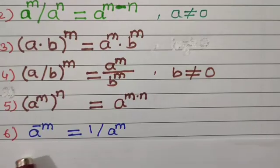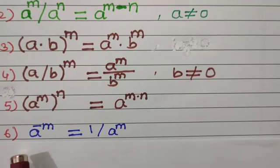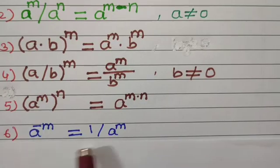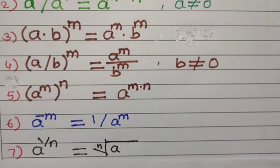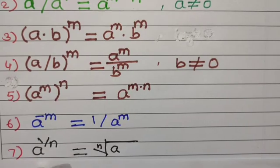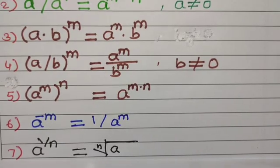Property number 6: a to the power minus m is equal to 1 upon a to the power m. When the power is negative, we take the reciprocal of the number with a positive power. Property number 7: a to the power 1 upon n — this power is the reciprocal of n — can be expressed as the nth root of a.